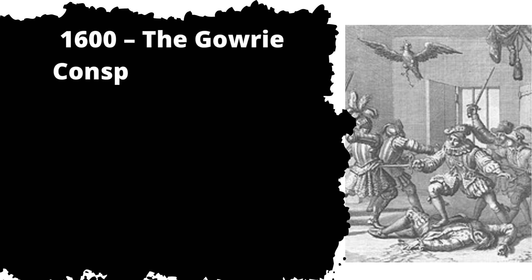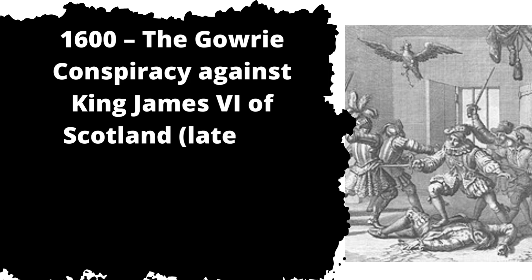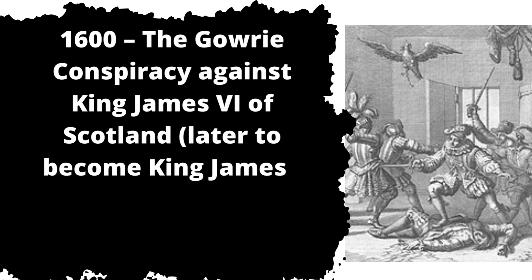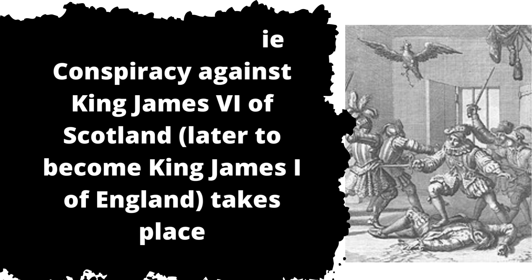1600: the Gowrie conspiracy against King James VI of Scotland, later to become King James I of England, takes place.